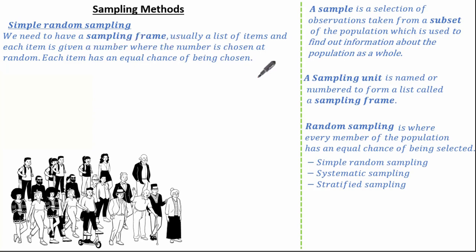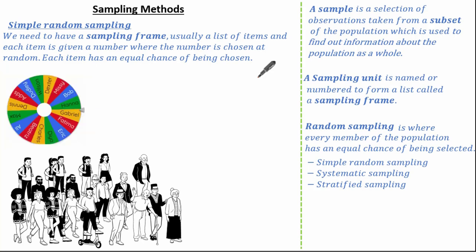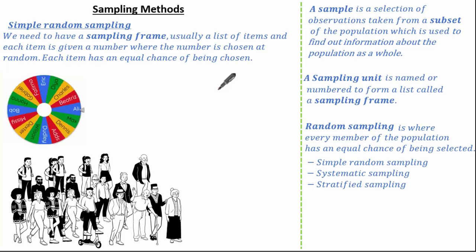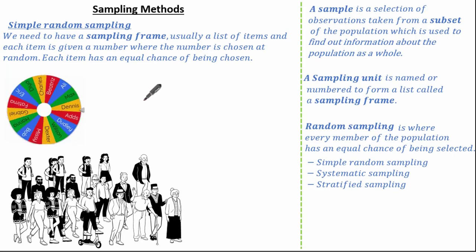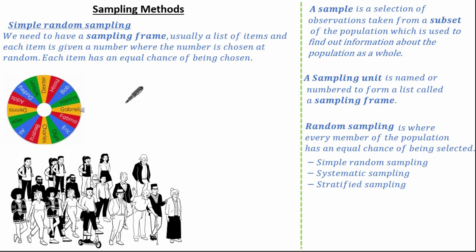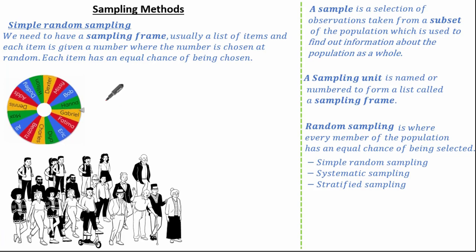Let's look at some simple random sampling examples and sampling frames. Here we have a spinner with names equally placed on it, and the spinner is spun the required number of times to get our sample. It's nice in theory but not very practical, though it's a good example of simple random sampling and a sampling frame.